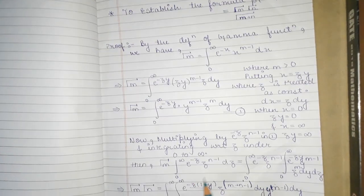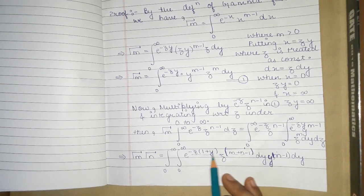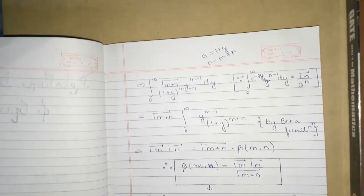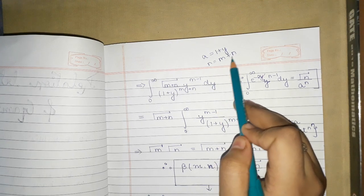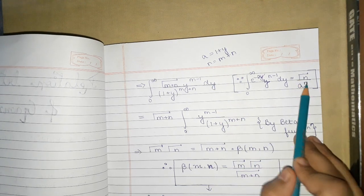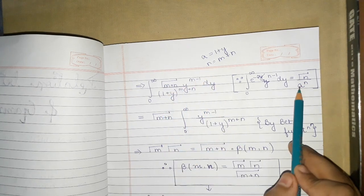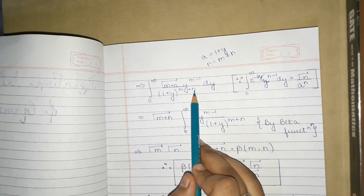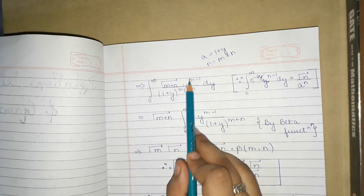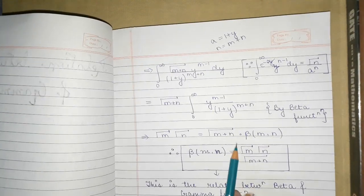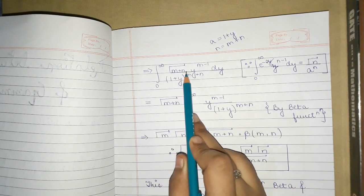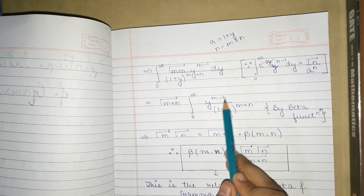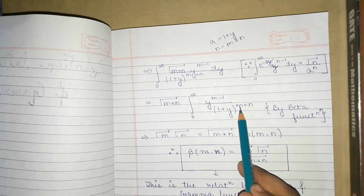This equation is in that same form, where a corresponds to (1+y) and n corresponds to (m+n). So the inner integral over z gives Gamma(m+n) divided by (1+y)^(m+n). Taking Gamma(m+n) outside, we are left with the integral from 0 to infinity of y^(m-1) divided by (1+y)^(m+n) dy.